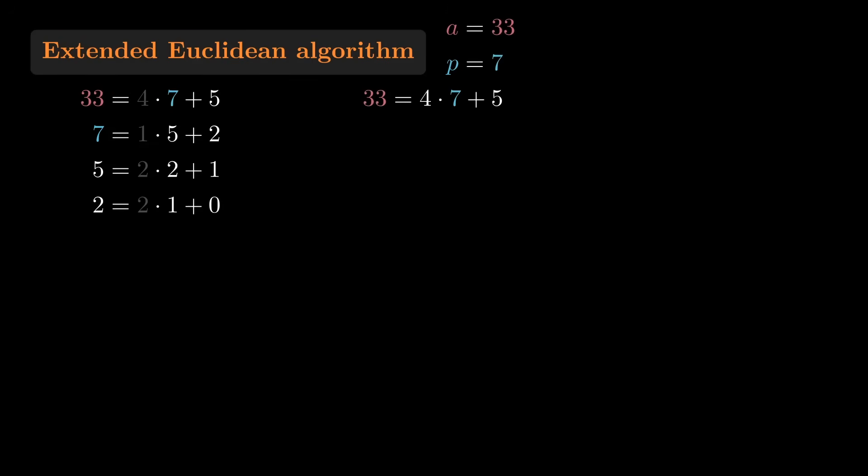Here's how it goes. This first equation says that A equals 4P plus 5. If we look ahead to the second equation, we see the remainder 5 that came down from the first equation. We're going to want to rewrite this 5 as something involving A and P. So before going there, let's solve for 5 here.